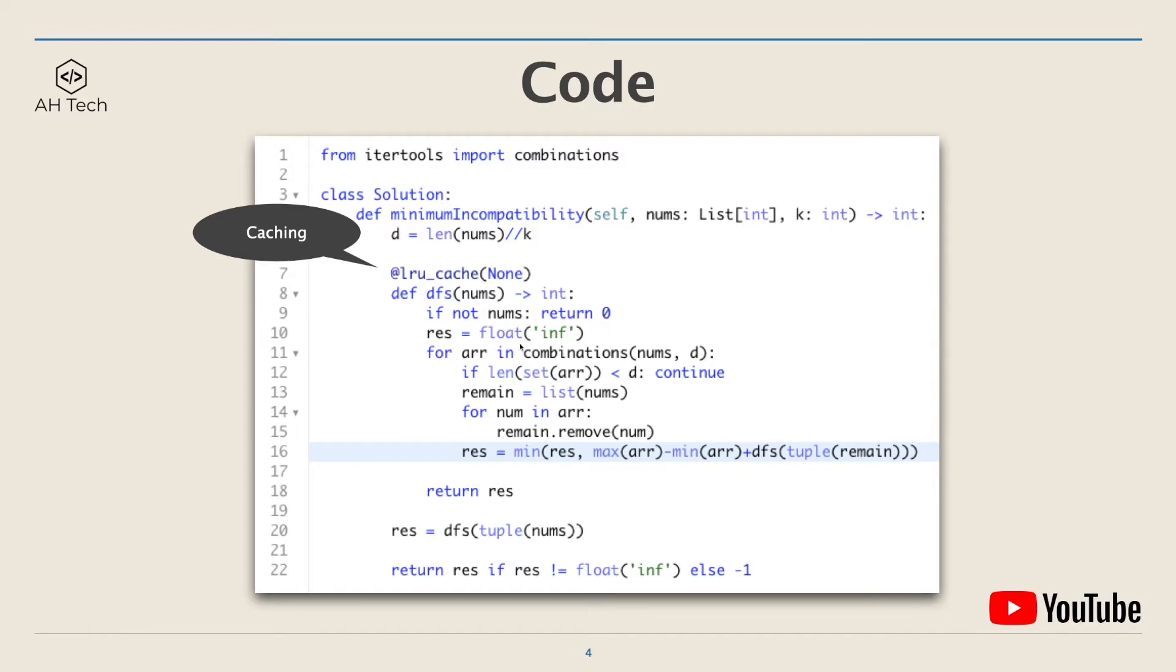Here res is the output of the DFS function, initialized to positive infinity. Next, generate the subsets using the combination function, then loop through the subsets. Here is a condition to check if there are duplicate elements in the subset.